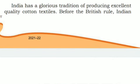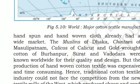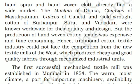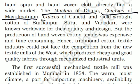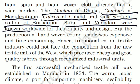India has a glorious tradition of producing excellent quality cotton textiles before the British rule. Indian hand-spun and hand-woven cloth already had a wide market. The muslins of Dhaka, chintzes of Masulipatnam, calicoes of Calicut, and gold-wrought cotton of Burhanpur, Surat, and Vadodara were known worldwide for their quality and design. But the production of hand-woven cotton textile was expensive and time-consuming. Hence, the traditional cotton textile industry could not face competition from the new textile mills of the West, which produced cheap and good quality fabrics through mechanized industrial units.